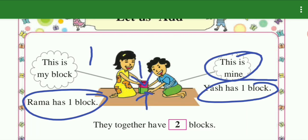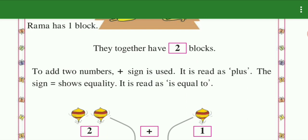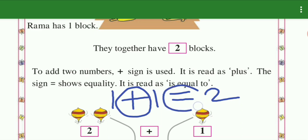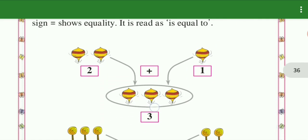Yesh and Rama together have blocks. To add two numbers, the plus sign is used. The equal sign shows equality. It is read as equal to. One plus one equals two.